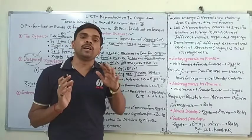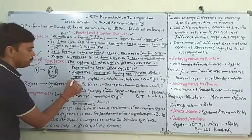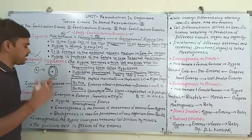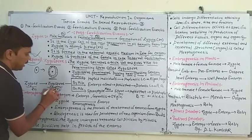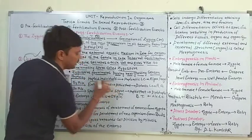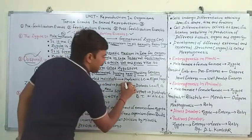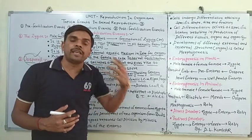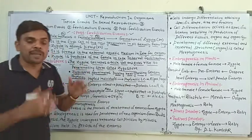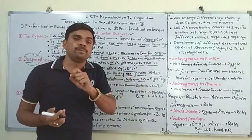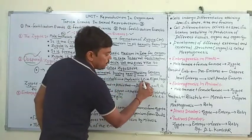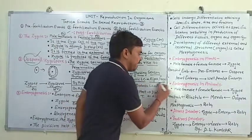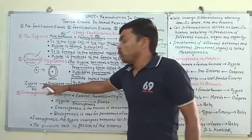Zygospore से next generation कैसे develop होती है: अगर Zygospore में meiosis division होता है तो haploid condition आएगी — यह diploid 2N है। Meiosis division होने से haploid individual या haploid organism develop होंगे। इस प्रकार के life cycle को हम haplontic life cycle कहते हैं। Haplontic life cycle algae और fungi में present होता है।